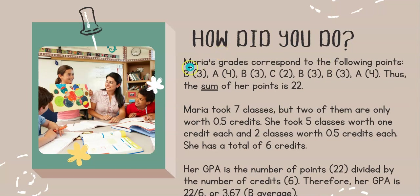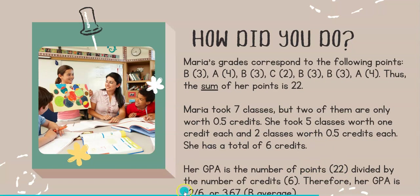Let's check how you did. Maria's grades correspond to the following points: B is three, A is four, C is two. Adding together all of her points, the sum is 22 points. Maria took seven classes, but two of them are only worth half a credit. She took five classes worth one credit each and two classes worth 0.5 credits each, so she has a total of six credits. Her GPA is 22 divided by six, which is equivalent to 3.67, which is a B average — about a middle B.